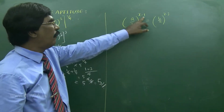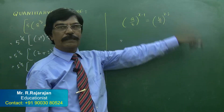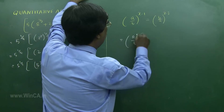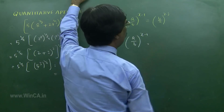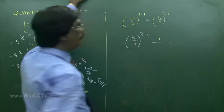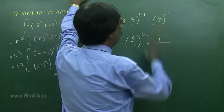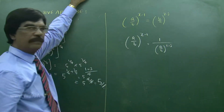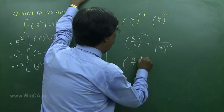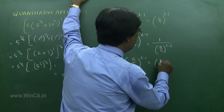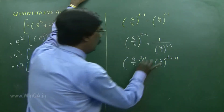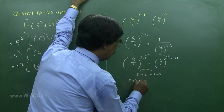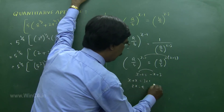Next problem: (A by B) to the power of x minus 1 equals (B by A) to the power of x minus 3. Note B by A is the reverse of A by B. Write B by A as (A by B) to the power of minus 1, then bring it across: (A by B) to the power of x minus 1 equals (A by B) to the power of minus (x minus 3). Equate the powers: x minus 1 equals minus x plus 3, so 2x equals 4, and x equals 2.